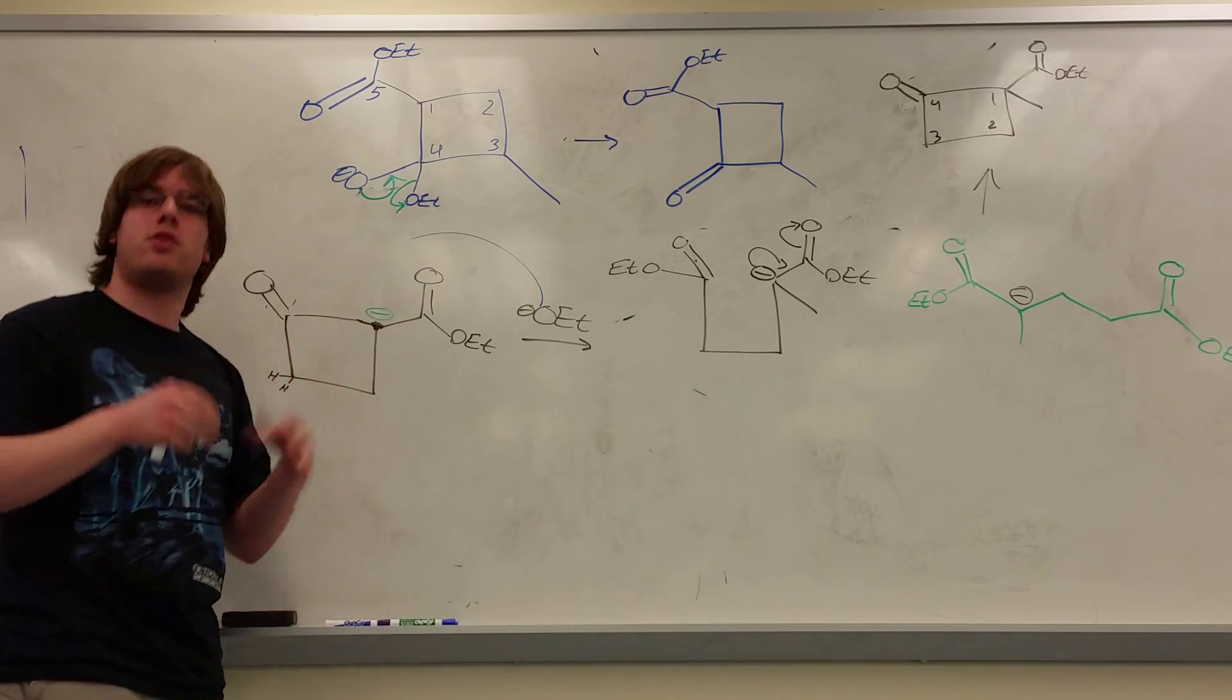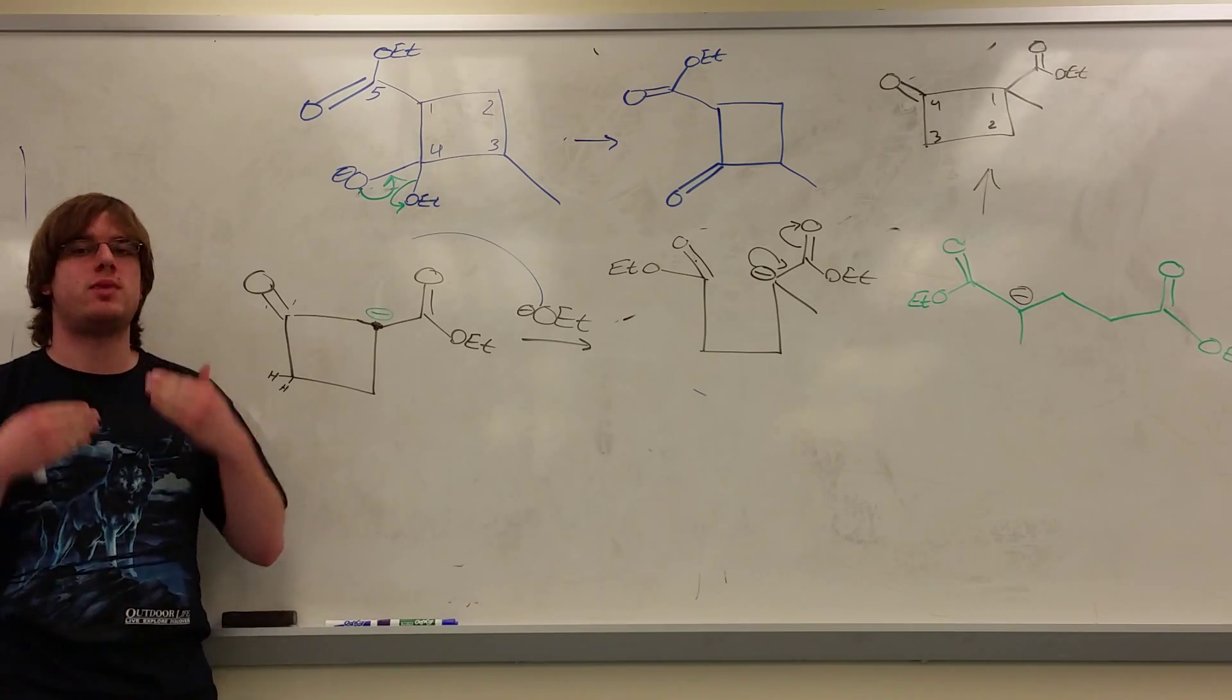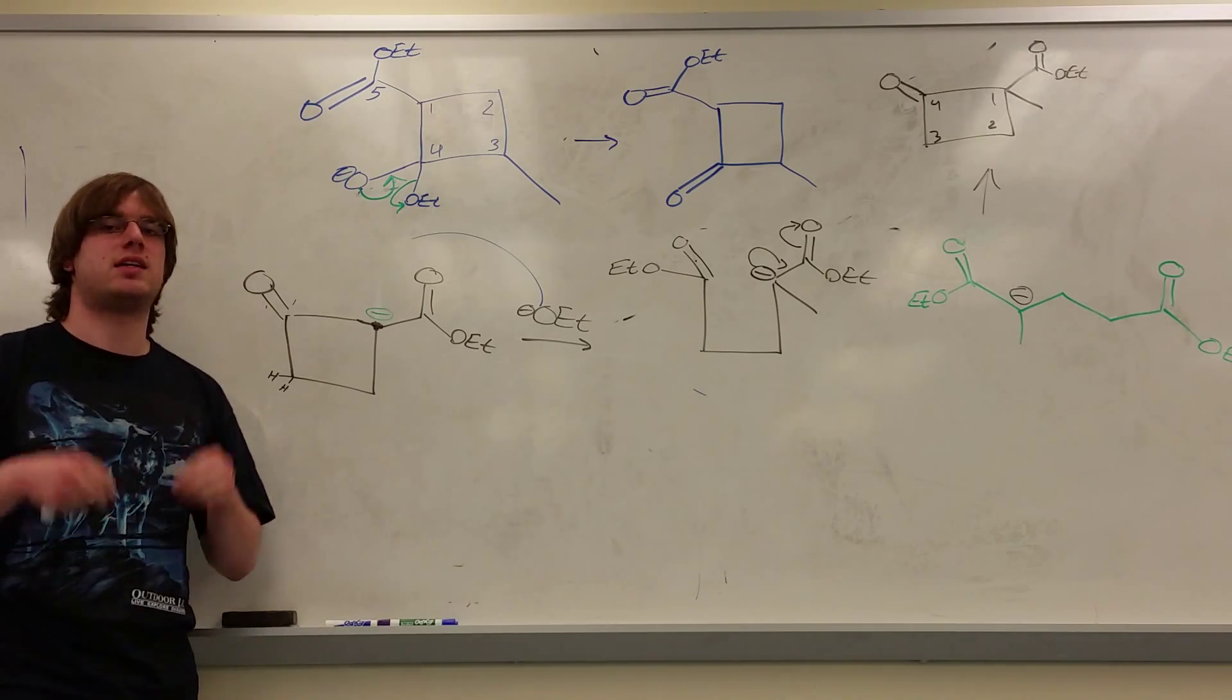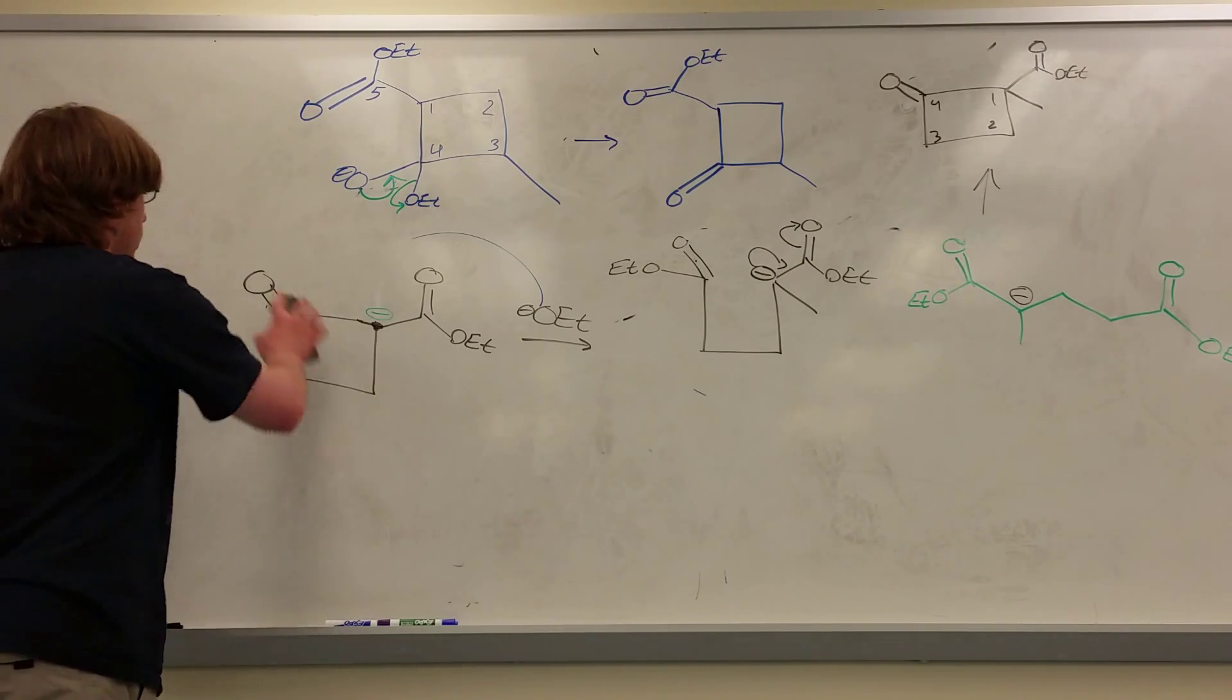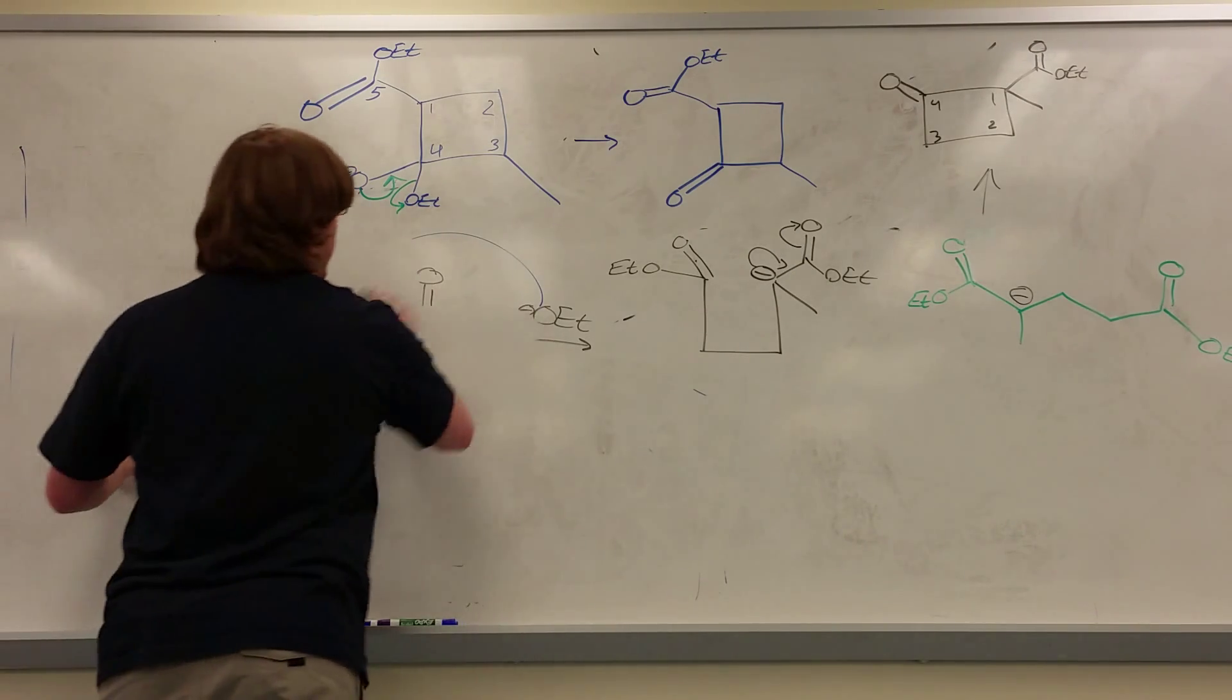But because we didn't have those two alpha protons, it didn't work out so nicely. So, the long story short is whenever you do a Claisen reaction, always make sure that you pull off from the site that has at least two alpha hydrogens. Aldols don't have that rule, so you don't have to worry about it in that case.